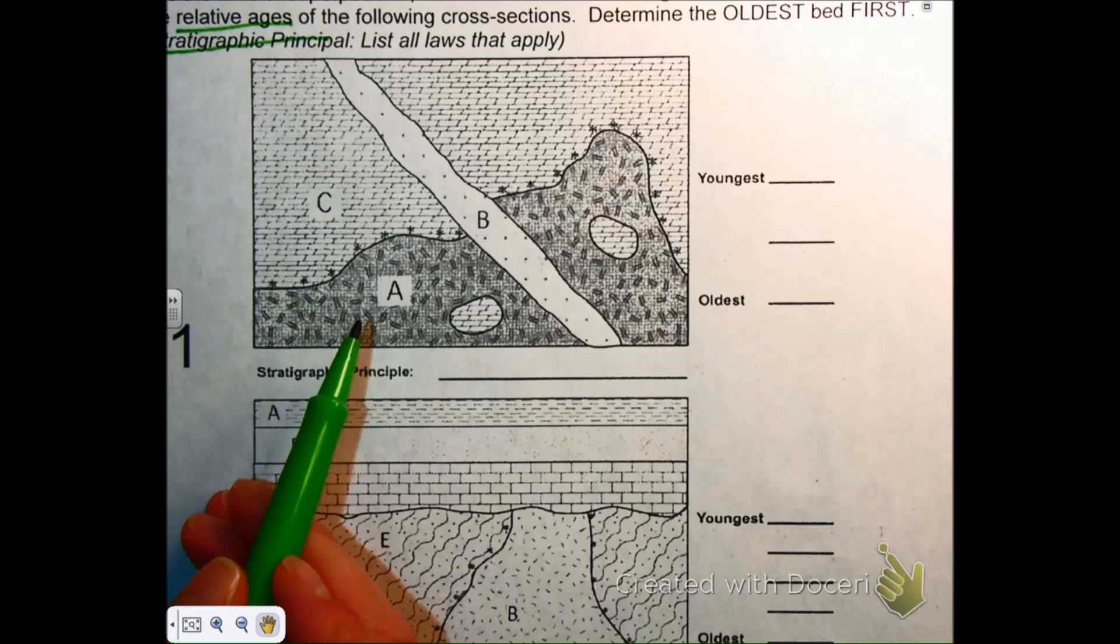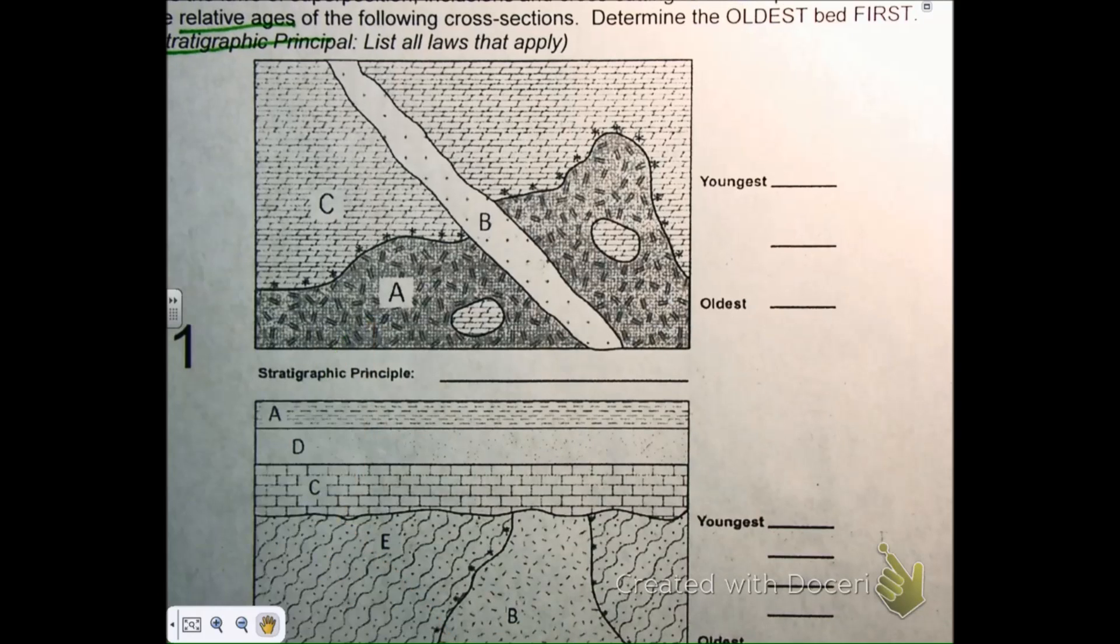C, because the law of superposition says the fragments of C are in A. The law of superposition says those fragments are older than the thing that surrounds it. Okay, so you're saying that these right here are inclusions of layer C. How did you know that?